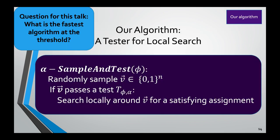Our algorithm is almost the same, but with one simple optimization: instead of searching in the neighborhood of every sampled assignment, we only search in the neighborhood of the good ones. We sample assignments, and before performing an expensive local search, we determine whether that assignment is likely to be close to a satisfying assignment. There's no point searching the neighborhood of hopeless-seeming assignments — ones that look really far from satisfying the formula. It's much more efficient to apply a cheap test first and only search if the assignment passes.